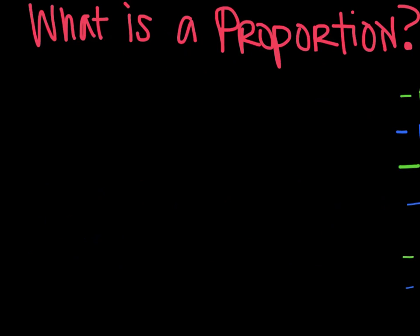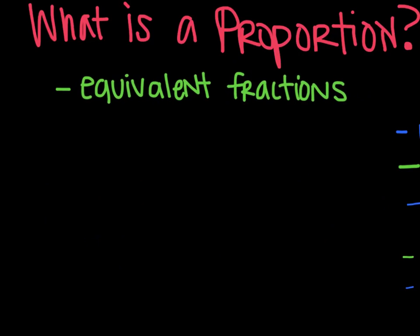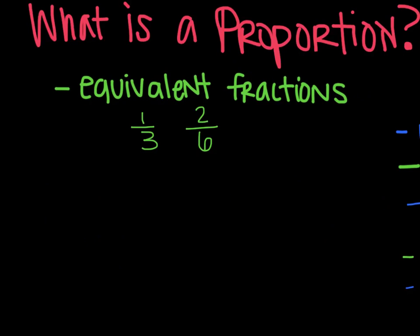So the first thing we need to do is talk about what a proportion is. As you know, there's a long list, so here we go. A proportion, you can actually see this as an equivalent fraction. So for example, if I have one-third and two-sixths, those are equivalent fractions. They are also proportional, so make sure you get that example down.